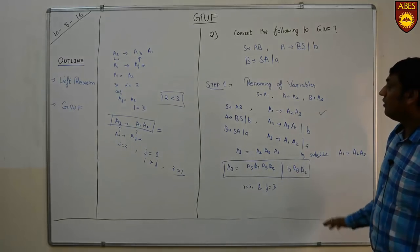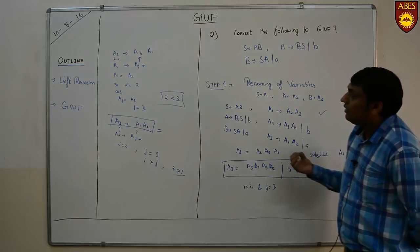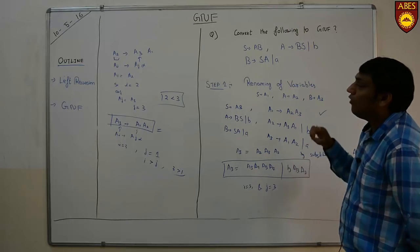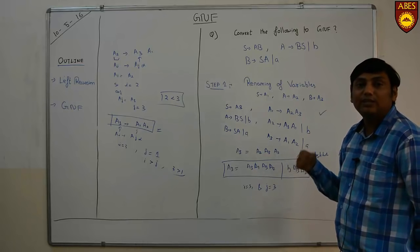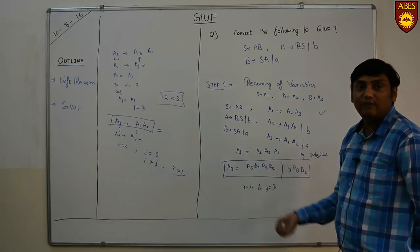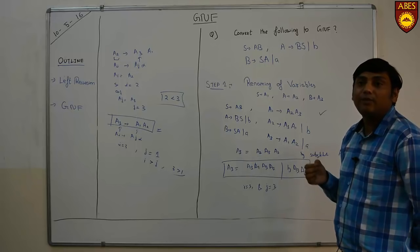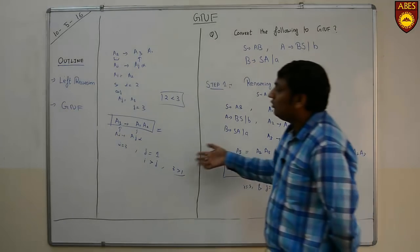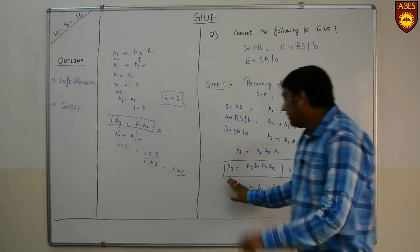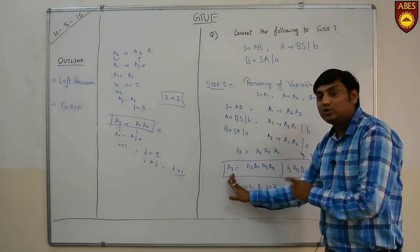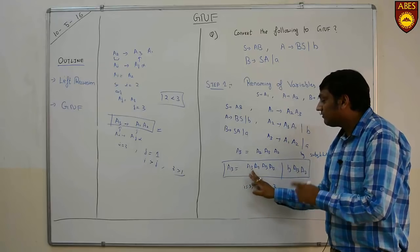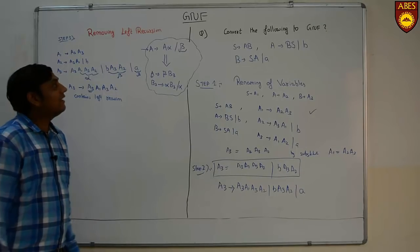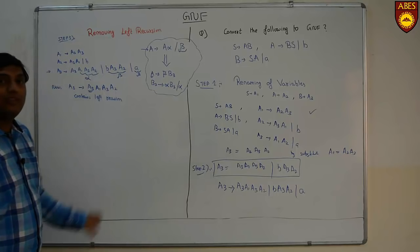So this was step 2, in which we convert all productions where Ai tends to form Aj alpha with i greater than j, making the left-hand side variable index at least equal to the first variable on the right-hand side. The next step is to remove the left recursion.